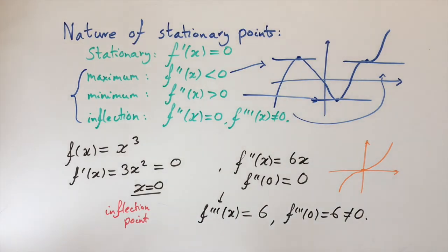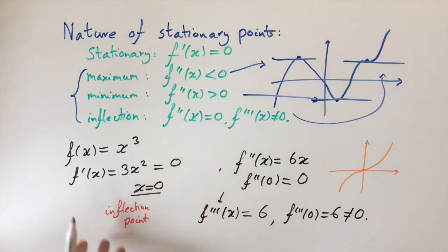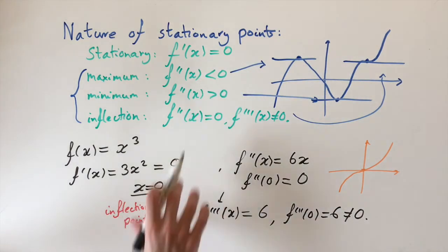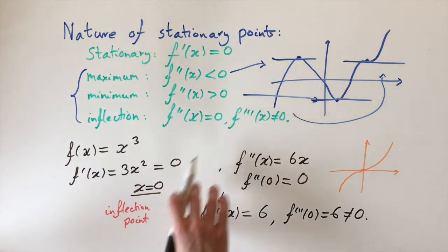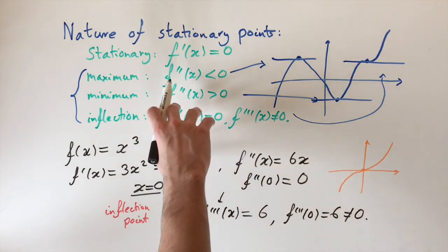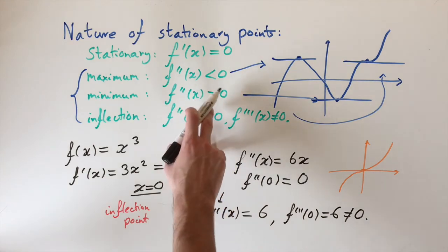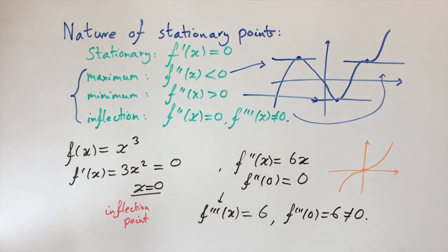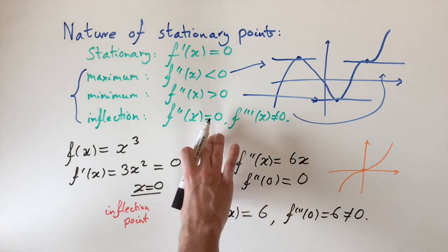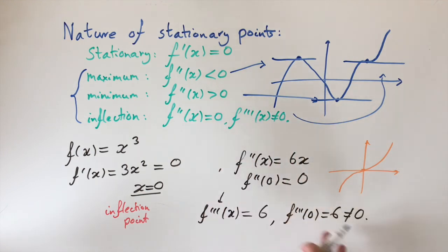Remember the method is always the same: find the derivative and set that equal to zero, then find the turning points by solving that equation. To find the nature of these turning points, find the second-order derivative and input those values into that function. Depending on the sign of the output — if it's negative, it's a maximum; if it's positive, it's a minimum. But if it's zero, we can't tell yet until we find the third-order information. If the third derivative is non-zero, like in this example, we can conclude it's an inflection point.